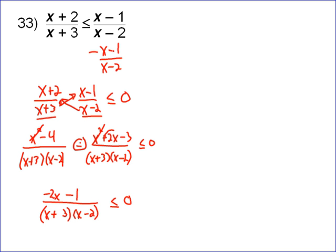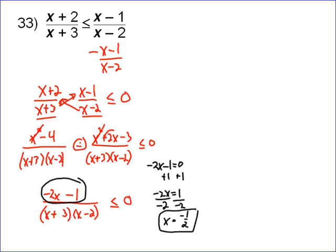That means the zeros are easy to find. When does the numerator equal 0? Well, just set that equation out. Negative 2x minus 1 equal to 0. Add 1. Negative 2x equals 1. Divide by negative 2. x equals negative 1 half. So that's one of the zeros.